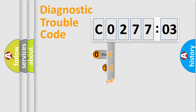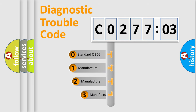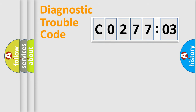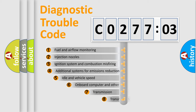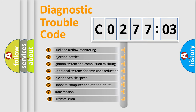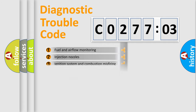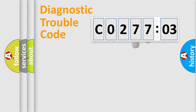This distribution is defined in the first character of the code. If the second character is expressed as zero, it is a standardized error. In the case of numbers 1, 2, or 3, it is a more specific expression of the car-specific error. The third character specifies a subset of errors. This distribution is valid only for the standardized DTC code.